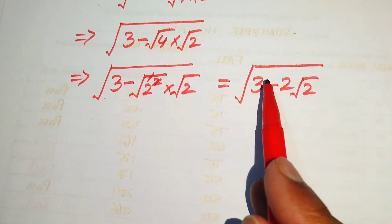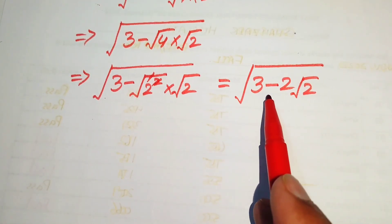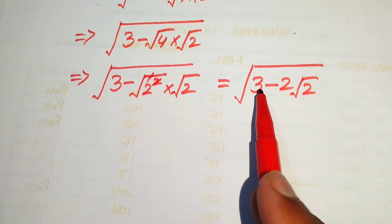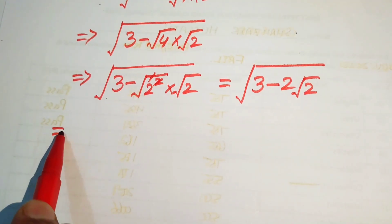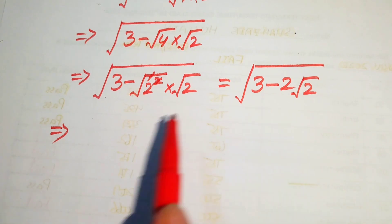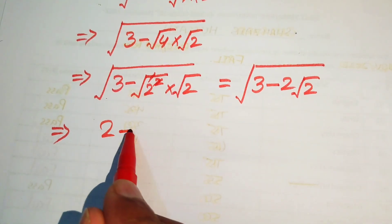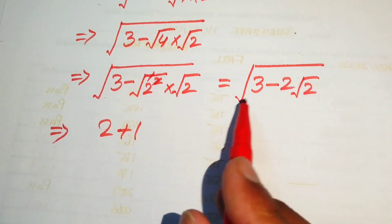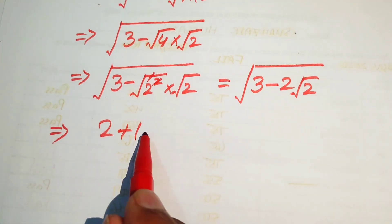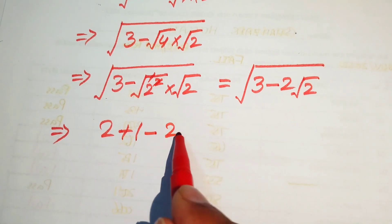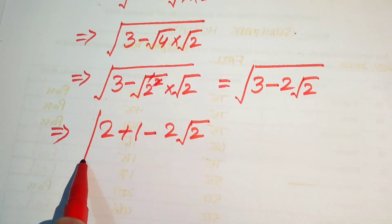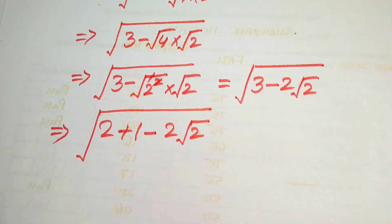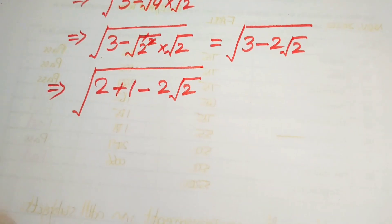After this step we need more simplification. We focus on the value inside the square root: 3 minus 2 times square root of 2. We break this 3 as 2 plus 1 — we know that 2 plus 1 is 3 — minus 2 times square root of 2, and its whole square root.